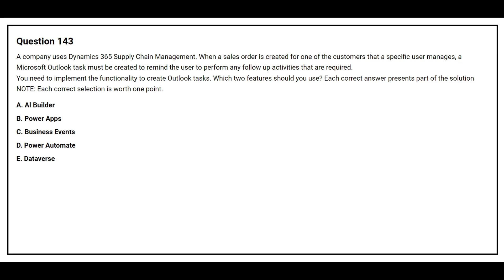Question number 143. A company uses Dynamics 365 Supply Chain Management. When a sales order is created for one of the customers that a specific user manages, a Microsoft Outlook task must be created to remind the user to perform any follow-up activities that are required. You need to implement the functionality to create the Outlook task. Which two features should you use? Option A: AI Builder. Option B: Power Apps. Option C: Business Events. Option D: Power Automate. Option E: Dataverse.